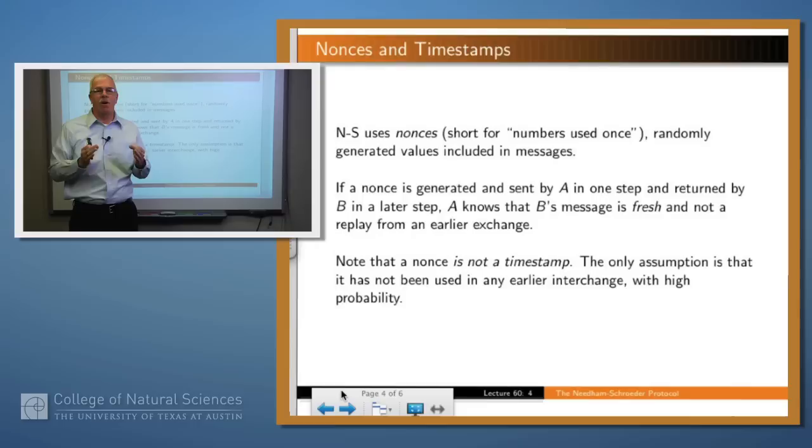Another idea that we need to introduce here is the notion of a nonce. Nonce stands for number used once. It's just a randomly generated number that one of the parties, say A or B, generates. If A generates a random number and it's sufficiently large number, say 32 bits, and includes it in a message to the other party, B,